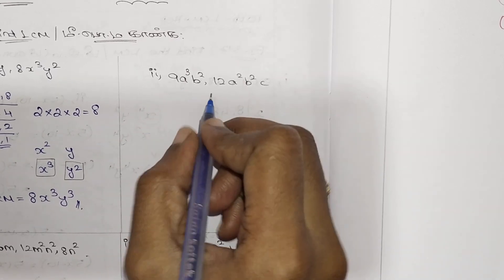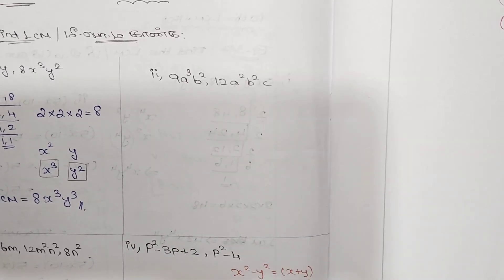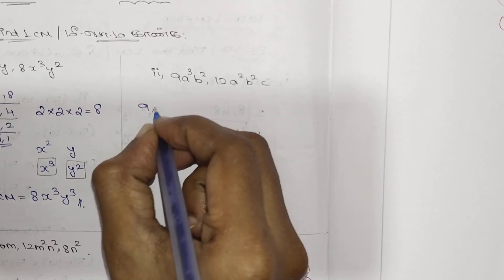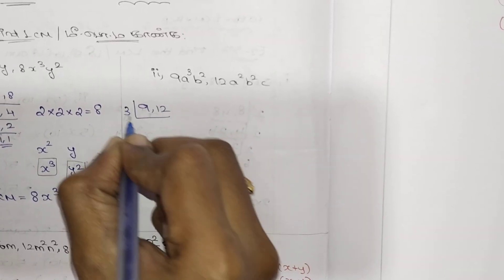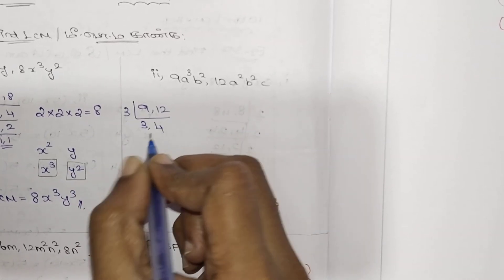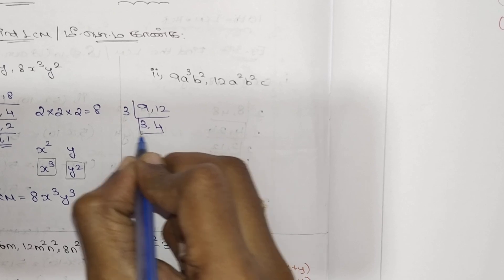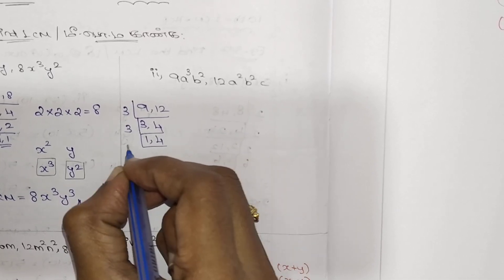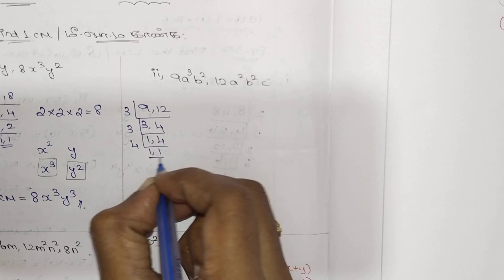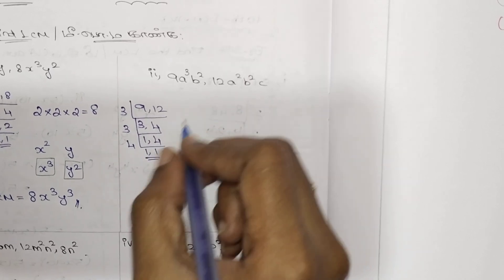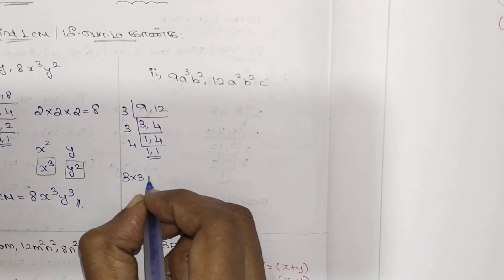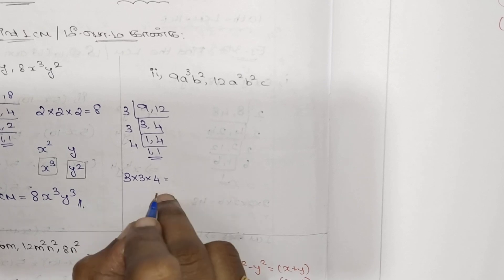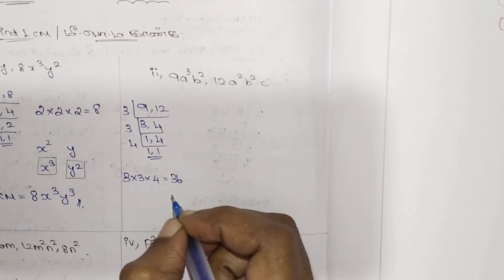Next example: 9a³b² and 12a²b²c. So what do you do first? Numbers. The 3 table gives 9; 4×3 is 12. So: 1, 3 is 3; 4 is 3. This gives 1, and 3 is 4. Then 3 is 9; 9×4 is 36.